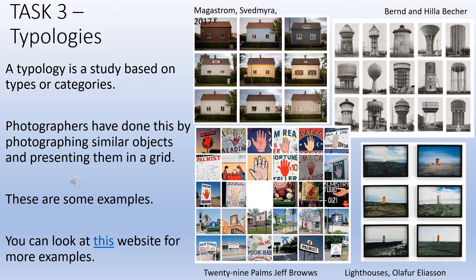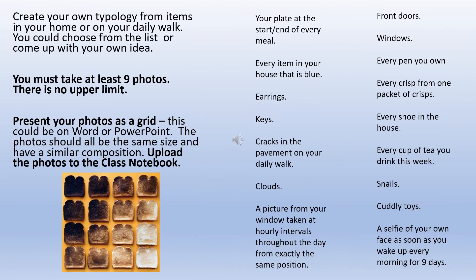The next task is about photographing collections of things. The objects could be large things outside — like houses and structures — or small things like jewellery. It's about collecting pictures of similar objects and presenting them together like a collection. I've got a list of suggestions on the right-hand side, but you don't have to use my list — you could choose your own. You could also photograph the same object numerous times with some kind of change, for example a piece of bread being toasted or cups of tea brewed for longer.